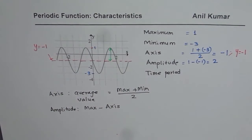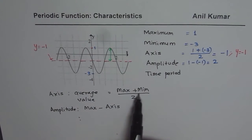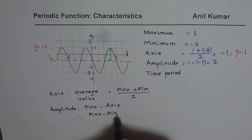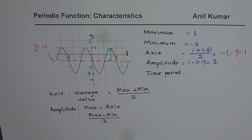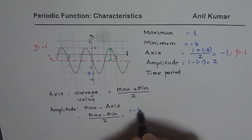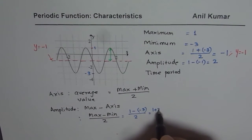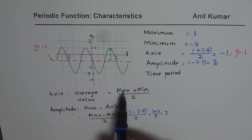There is another formula for amplitude. Just as we found the axis by finding the average, we can find the difference and divide by two: amplitude = (maximum − minimum) / 2. Using this: (1 − (−3)) / 2 = (1 + 3) / 2 = 4 / 2 = 2. We get exactly the same value.